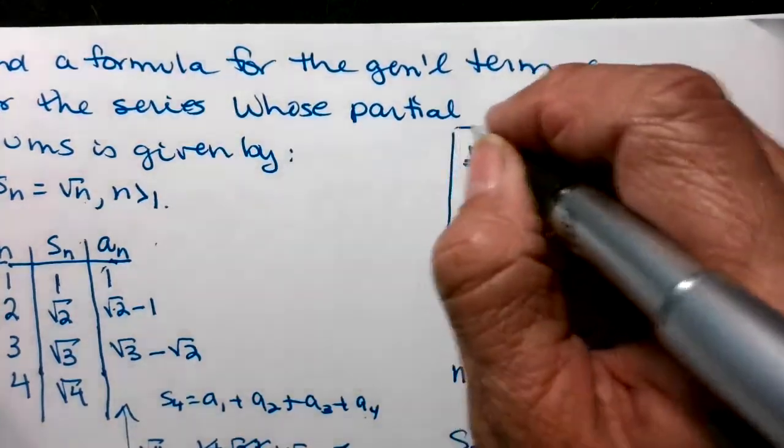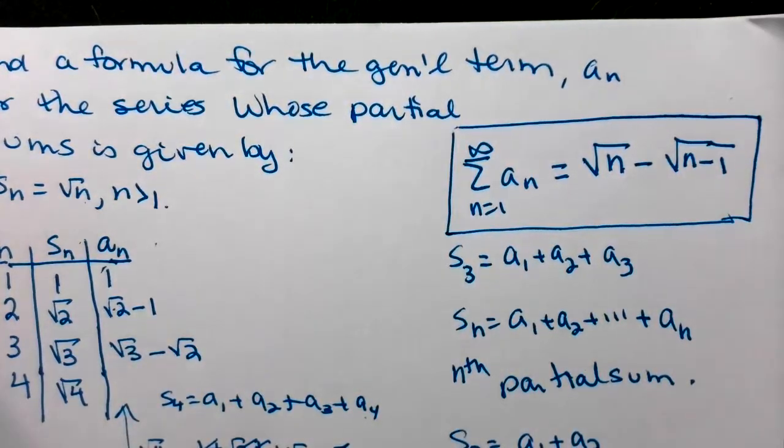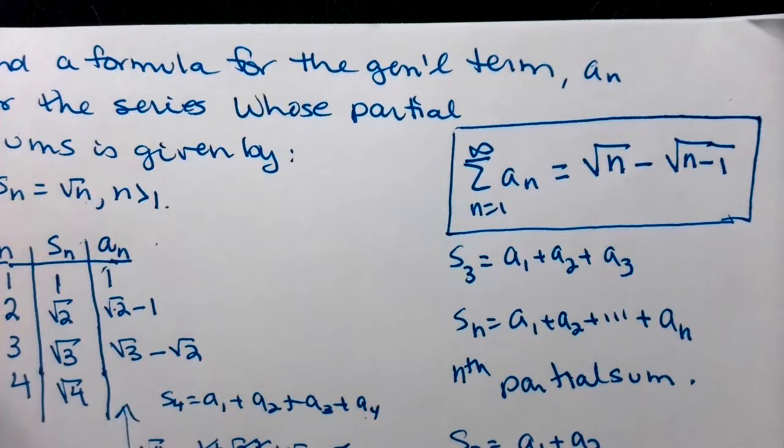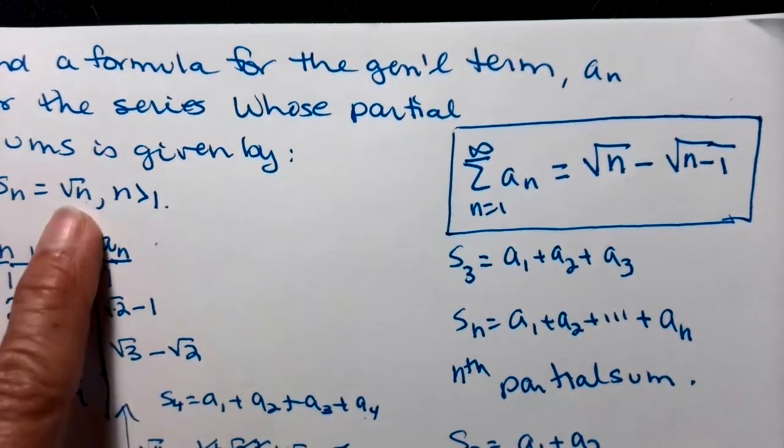So there is how we could write the series that leads to those partial sums that have a sum of the square root of n.